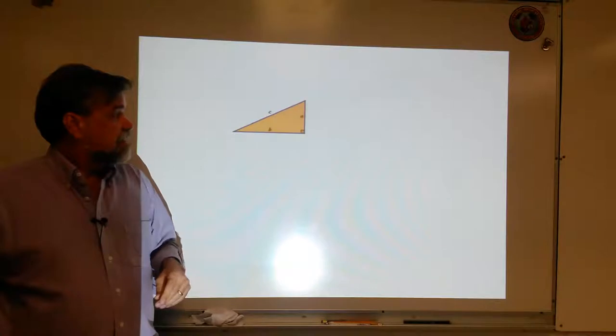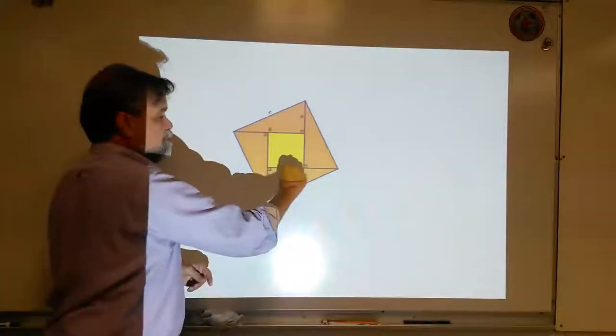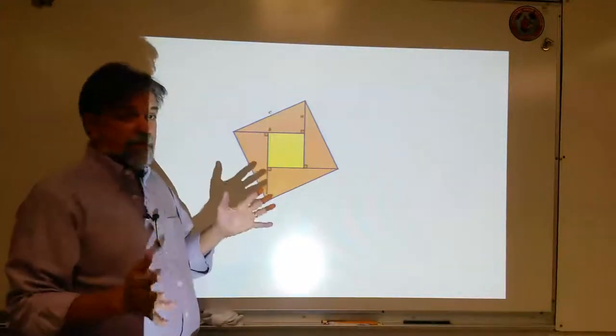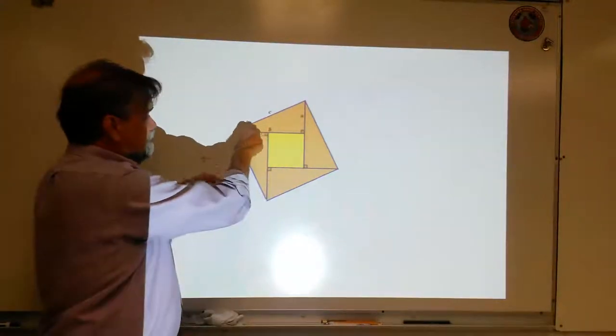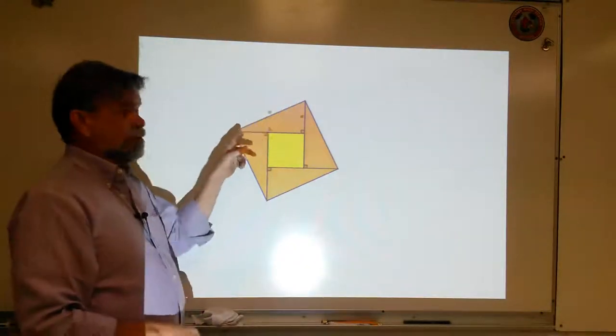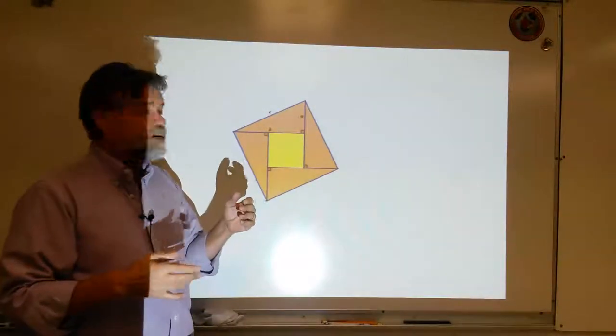So, what Bhaskara says is, let's draw three more triangles like this. So, what you get is a square. And we know it's a square because this angle here and this angle here are complementary angles, because they're the two non-right angles from a right triangle.